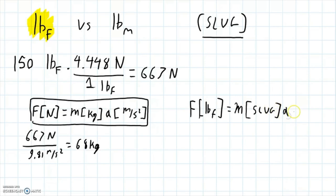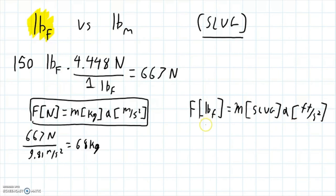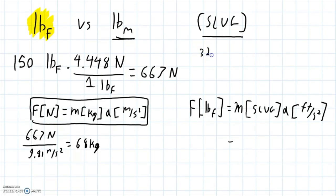So mass in slugs times acceleration in feet per second squared gives force. Just like one kilogram times one meter per second squared equals one Newton, here one slug times one foot per second squared equals one pound force. If I'm given anything in different units — maybe pounds mass — I need to convert it to slugs before I can calculate my pounds force. The conversion factor is 32.2 pounds mass equals one slug.